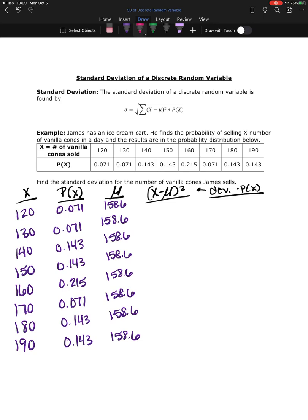So now the fourth column, I'm going to take the x value minus the mean and I'm going to square it. So 120 minus 158.6 squared is a big number. This is going to be 1489.96. So now the second one, 130 minus 158.6 squared is 817.96.